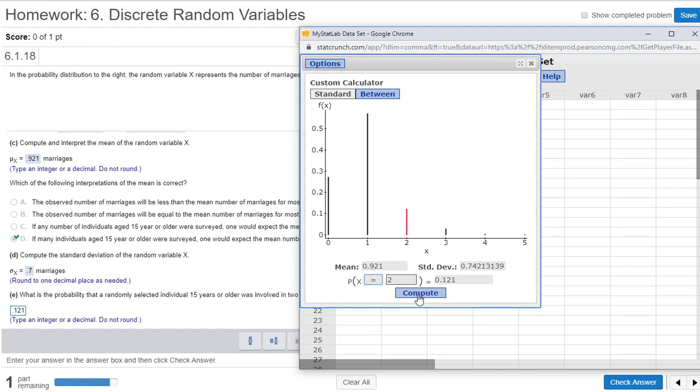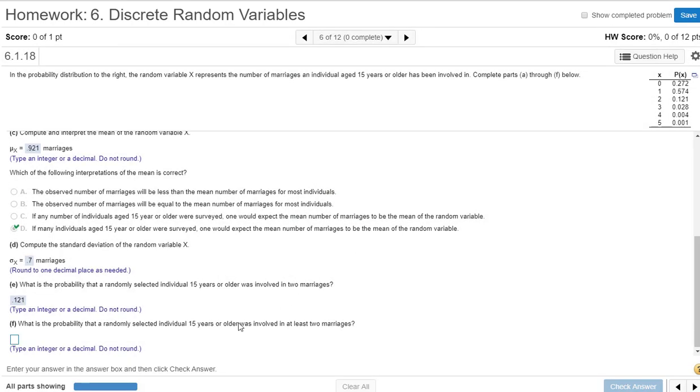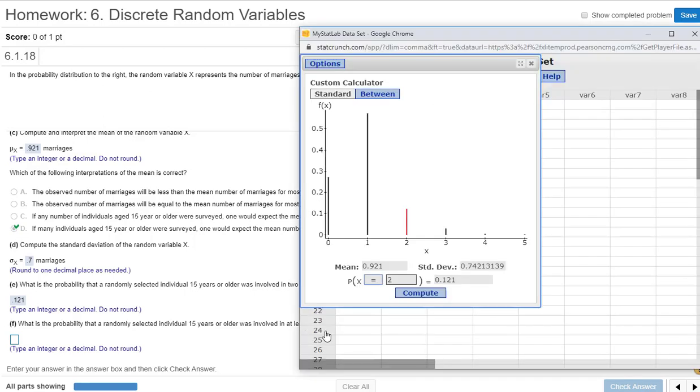Again, ours was equal to two, but I'm just showing you other questions that could be asked. So 0.121. So what is the probability that a randomly selected individual 15 years old or older was involved in at least two marriages? So always pause and think, what does at least two mean? Two is the least. So that means two or greater. And if we go back to our calculator, we're going to go two or greater is greater than or equal to two, which is 0.154.